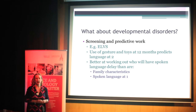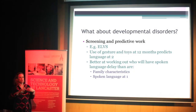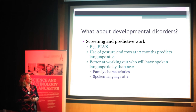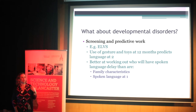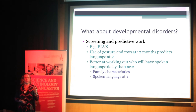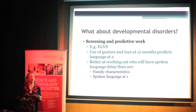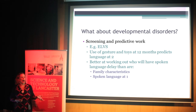We can also use parent report in screening and assessment of developmental disorders. The ELVS study — Early Language in Victoria, Australia — found using very similar questionnaires that when they asked parents about babies at 12 months, the baby's use of gesture and toys predicted how good they were going to be at language at age two. Interestingly, gesture and toy use was better at predicting spoken language problems than either family characteristics or spoken language at one year — which is interesting because you would think that spoken language at one would be the best predictor, but actually that wasn't the case.